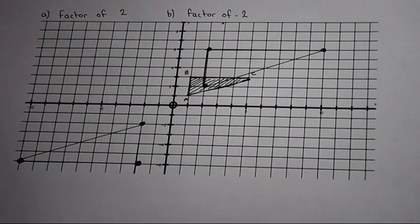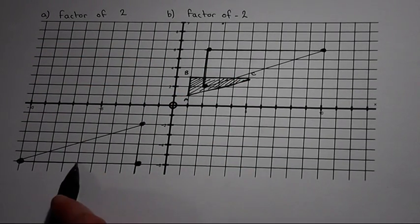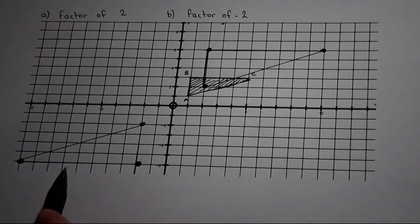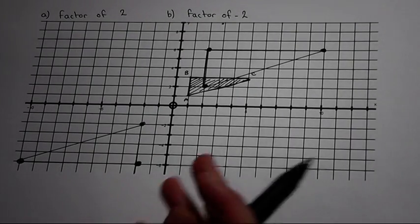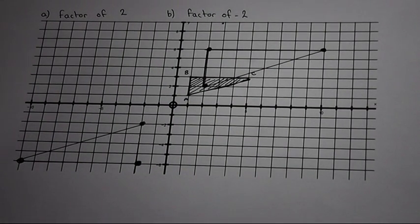So with a negative scale factor, yes the shape has been doubled in size. However, it appears to move into the other quadrant of the graph.